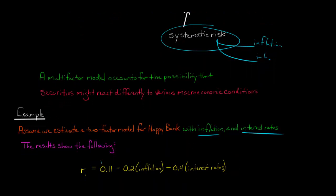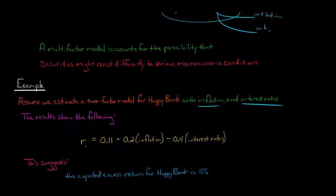And so we've got this 0.11 here. That's going to be the expected excess return for Happy Bank. So that's 11%, that's the expected excess return. But now we've got to think about our two factors.